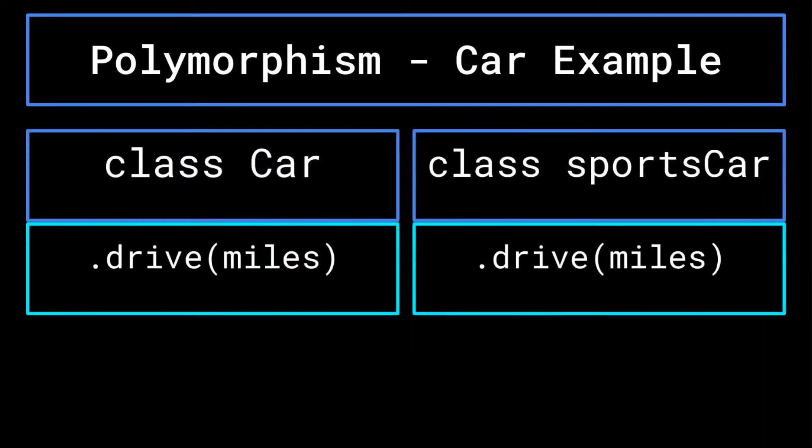In each of the classes, the dot drive function will take a double representing the number of miles you would like the car to drive. And the car's gas attribute will be decreased by the pertinent amount.